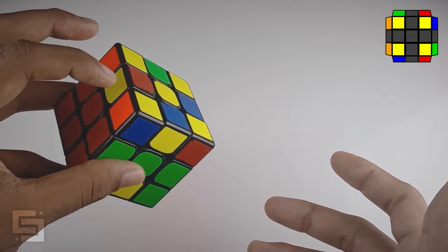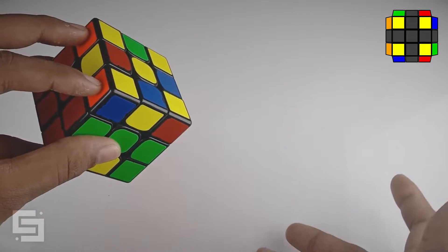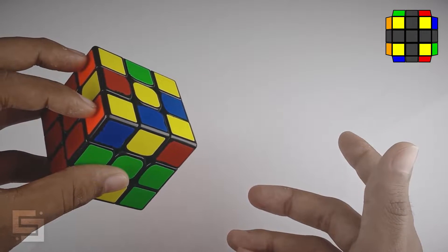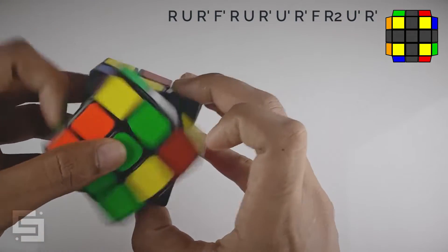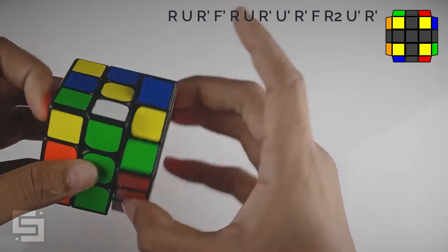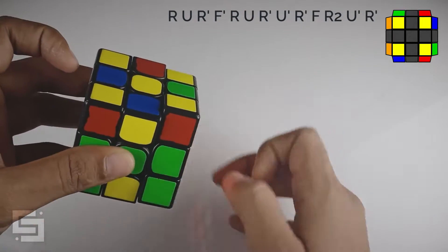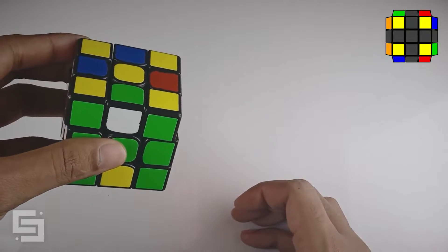And this is the first case that we have, it is the matching case because these 2 stickers are matching in here. We look out for these matching stickers and whenever we see them, we simply do our algorithm. And that will solve the CML case for us.